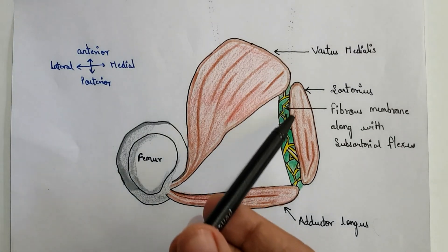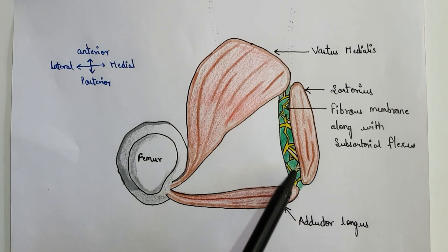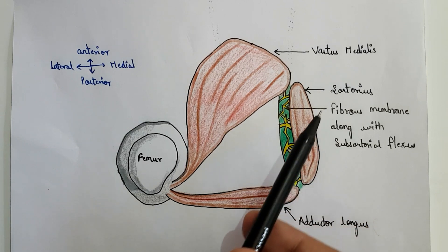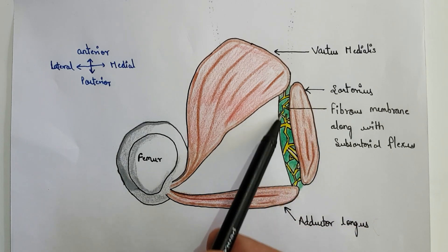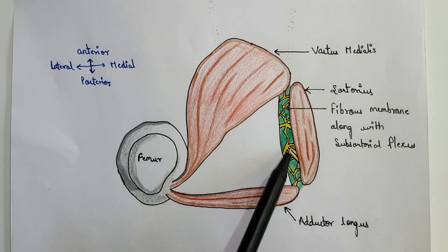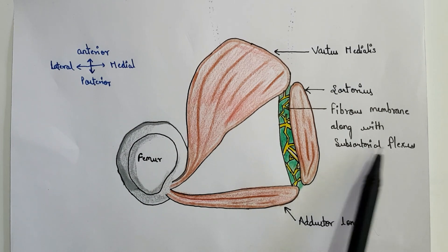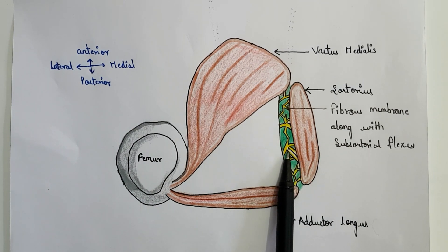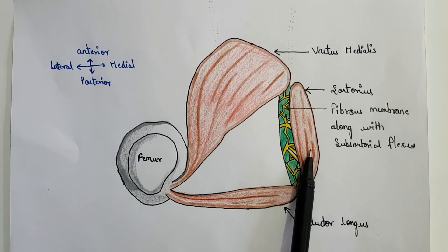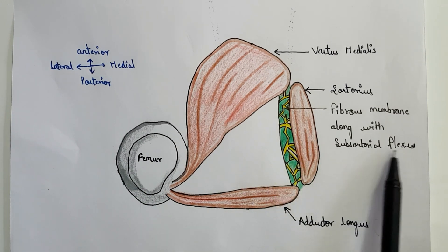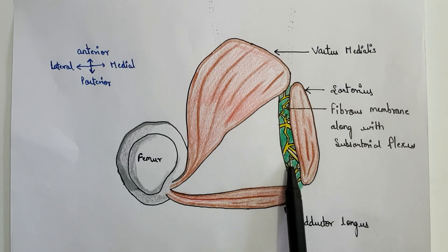The medial boundary of the adductor canal is formed by the sartorius muscle and a strong fibrous membrane, which is embedded with the subsartorial plexus. This membrane plus the sartorius muscle together form the medial boundary or roof of the adductor canal. Now let us talk about this subsartorial plexus embedded in the fibrous membrane.